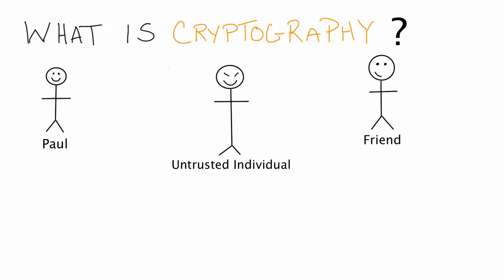So when Paul first writes the letter, he writes it in English because that's the language he speaks. So if Paul wrote his letter in English, Spanish, Chinese, German, French, or any of the common languages that a multitude of people understand, we would consider that this message is written in plain text. So if the message is written in plain text, that means it's very easy for anybody who speaks that language to understand its contents.